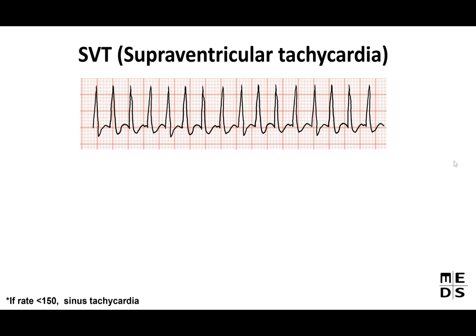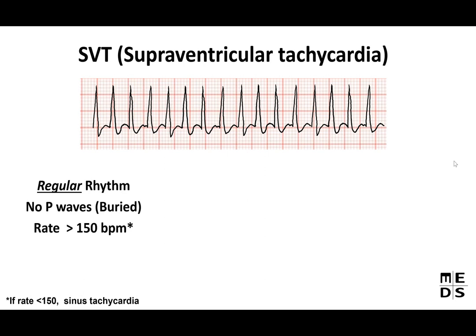First on deck is SVT — supraventricular tachycardia. It has a regular rhythm: R to R peaks are even throughout. There are P waves, but you can't see them because they're buried — the rate is going so fast. Typically the rate is over 150 BPM; if it's under 150, it's technically called sinus tachycardia. You'll also see a narrow QRS complex.